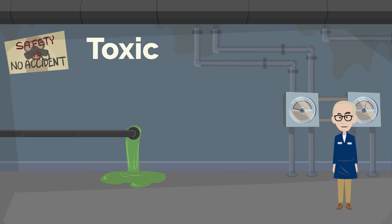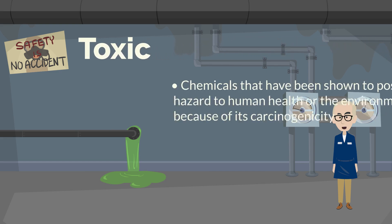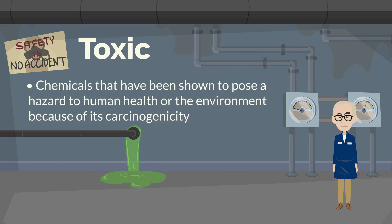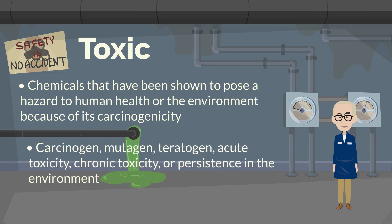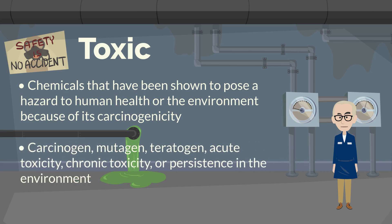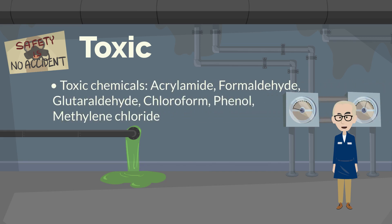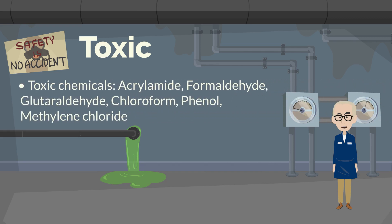Toxic. These are chemicals that have been shown to pose a hazard to human health or the environment because of their carcinogenicity — such as carcinogens, mutagens, teratogens — acute toxicity, chronic toxicity, or persistence in the environment. Some common examples of toxic chemicals are acrylamide, formaldehyde, glutaraldehyde, and others.